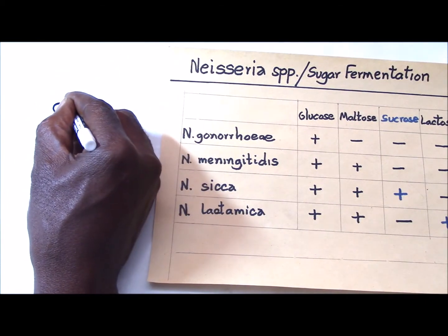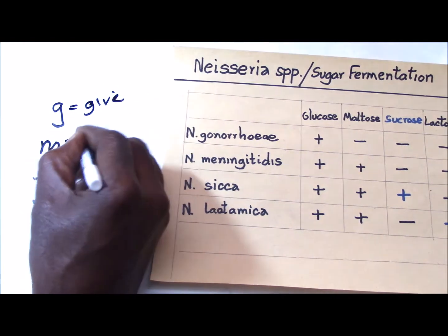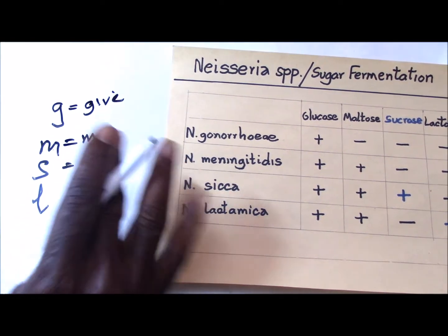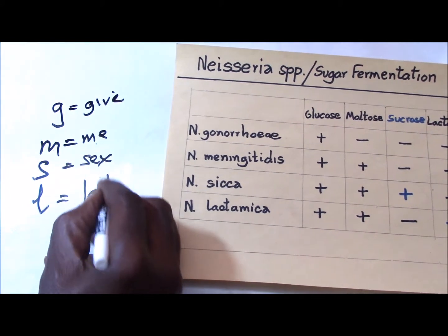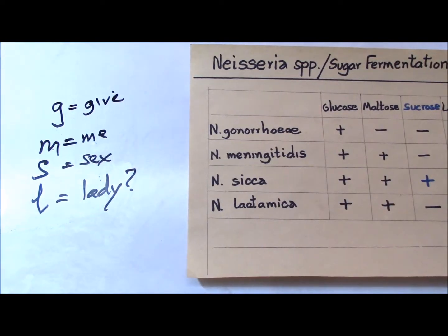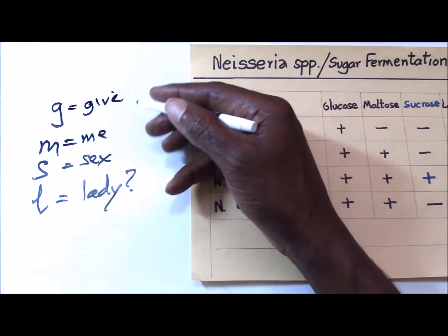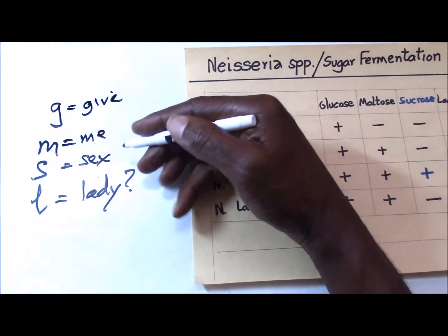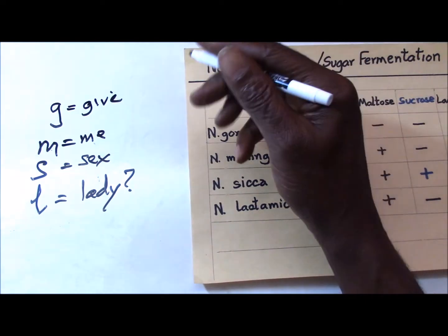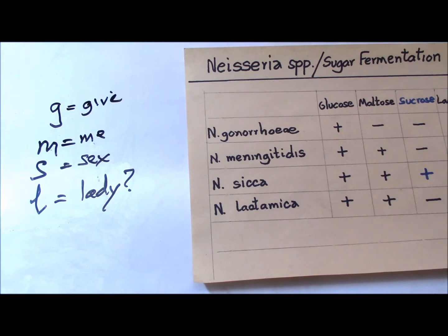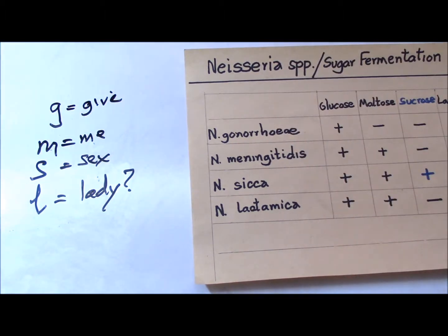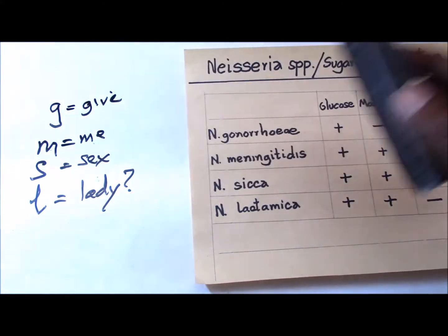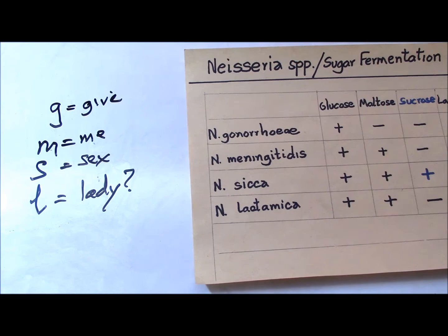My mnemonic says: give me sex lady. Now if that sounds vulgar, you can recast it and say, for instance, give me some love or give me some lactose. Whatever you do, choose something that you know you will be familiar with and can recall. And keep in mind that sex and gonorrhea are next door neighbors, so that will help you recall when you are in an exam setting.